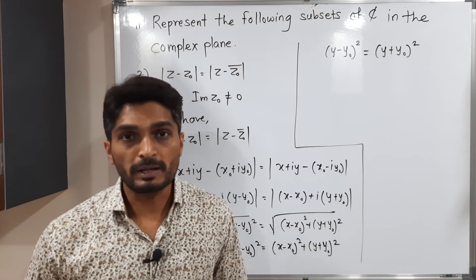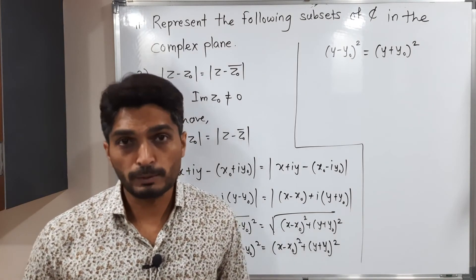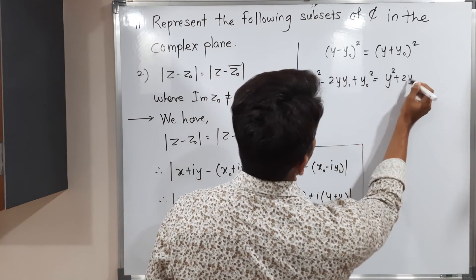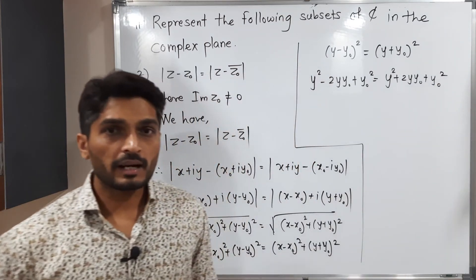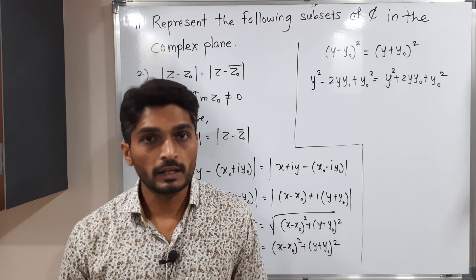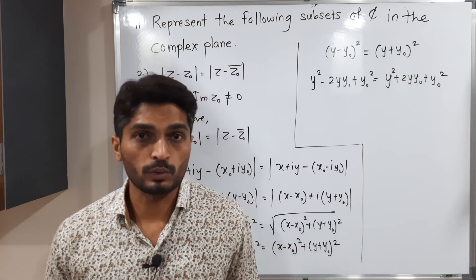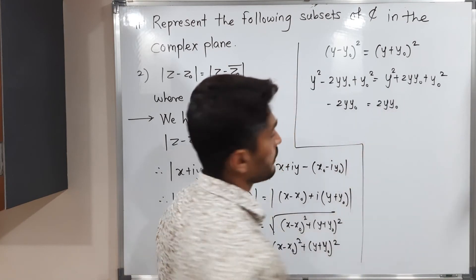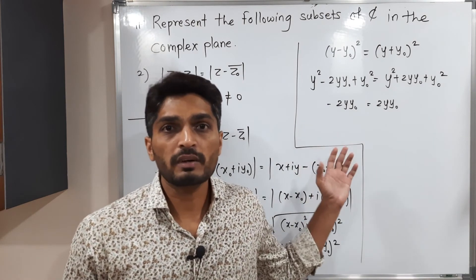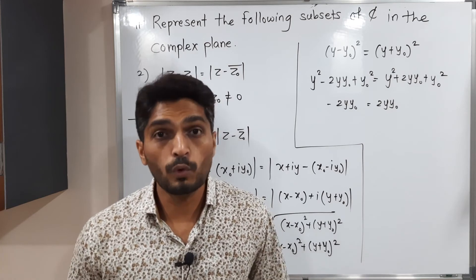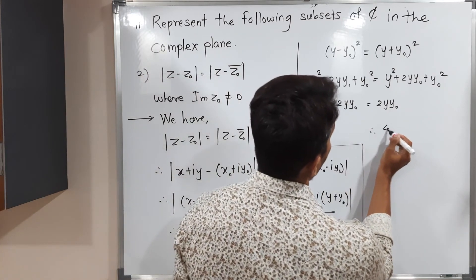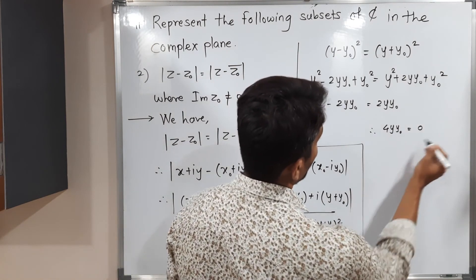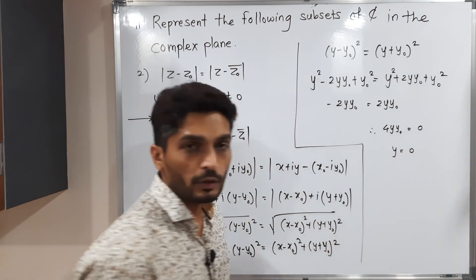Expanding both brackets using (A ± B)² formulas: y² − 2yy₀ + y₀² = y² + 2yy₀ + y₀². Cancelling y² and y₀² from both sides leaves −2yy₀ = 2yy₀. Shifting terms to one side gives 4yy₀ = 0.